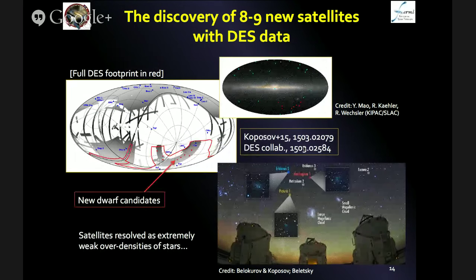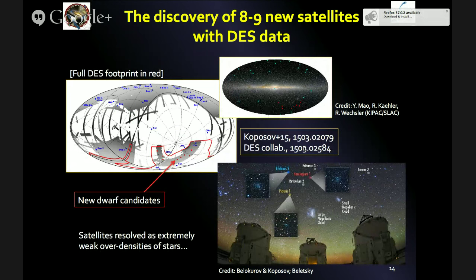The cool thing is that they actually detected a bunch of new candidates for dwarf galaxies. I put 8 or 9 in the title because there was work submitted in parallel to the DES collaboration's official work where the authors were reporting on the discovery of 9 satellites, while the DES collaboration officially reported on 8. This is a field evolving very rapidly and you may expect a lot more of these kind of objects to show up in the next year.